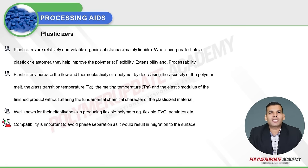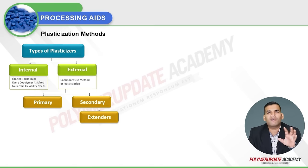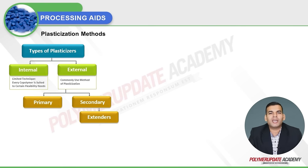Compatibility is important, as phase separation would result in migration to the surface, which happens in flexible cable applications. Plasticizers are categorized into internal and external methods of plasticization. Internal plasticization works on the synthesis side whereas external works at the compounding stage. Internal is a limited technique where every copolymer is suited to certain flexibility needs, whereas external is the commonly used method.